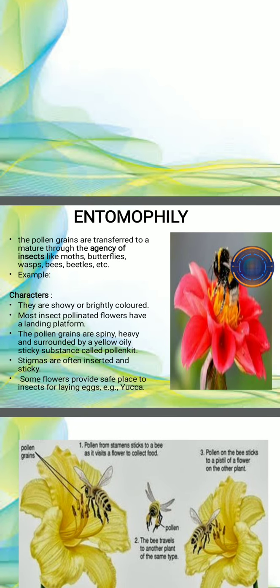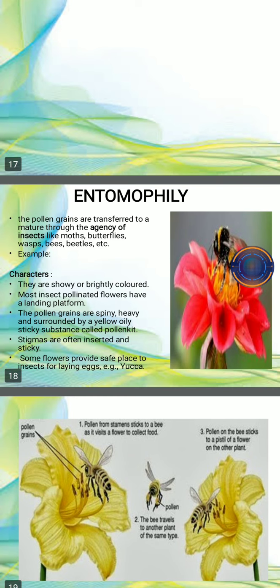Next is entomophily. Entomophilous flowers are those where pollen grains are transferred to the mature flower through the agency of insects like moths, butterflies, bees, beetles, etc. The various features are that the flowers are very showy and brightly colored to attract insects. Mostly insect-pollinated flowers have a landing platform. Pollen grains are spiny, heavy, and surrounded by a yellow sticky substance called pollen kit. Stigmas are often inserted and sticky.